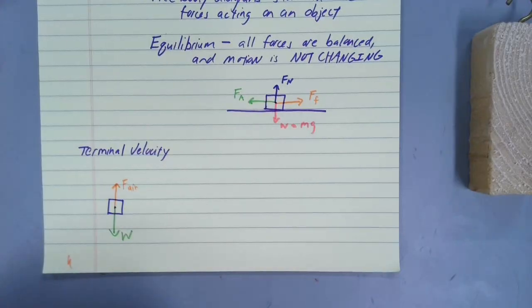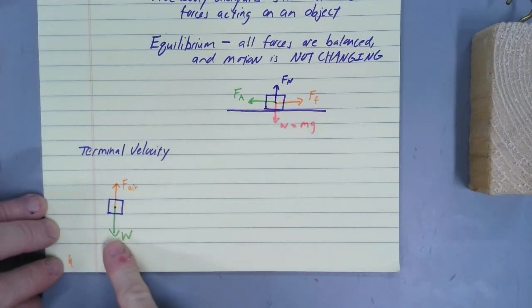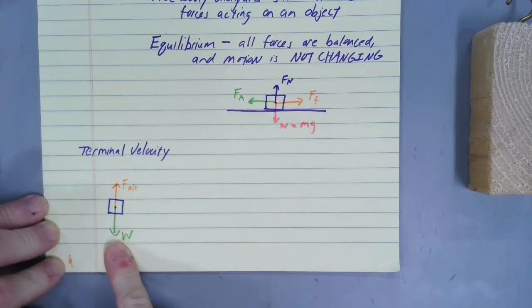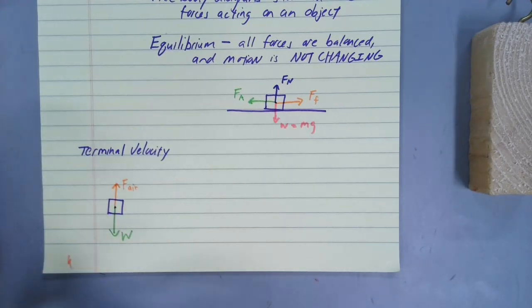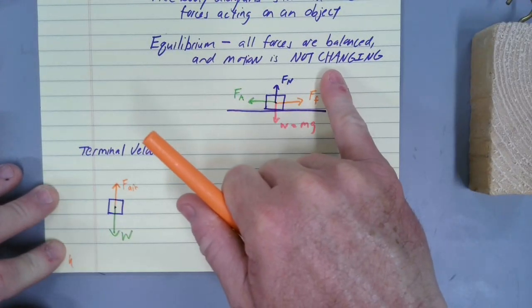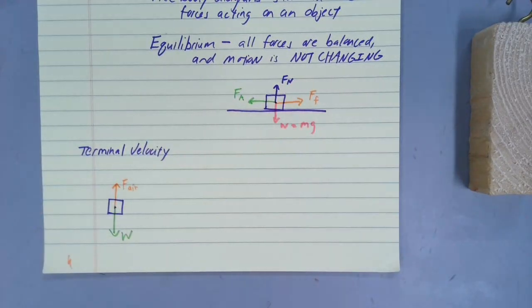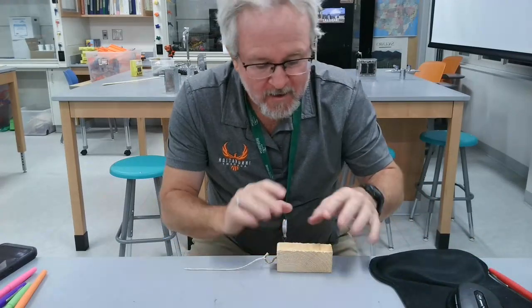That is the terminal or maximum velocity. For a skydiver falling and reaching a point where he doesn't speed up anymore — the force pulling him down, his weight, is equal to the force that air is pushing back. It doesn't mean he stops in mid-air; it just means the motion is no longer changing. We are not accelerating anymore.